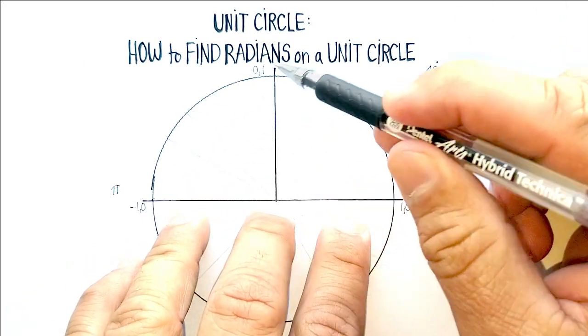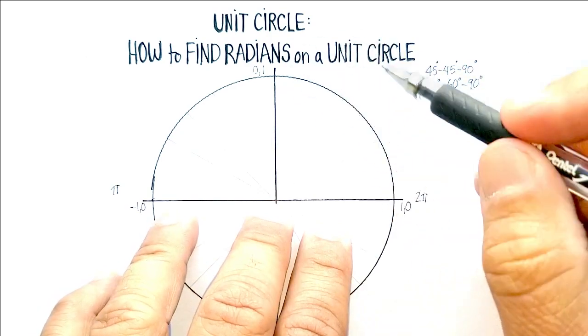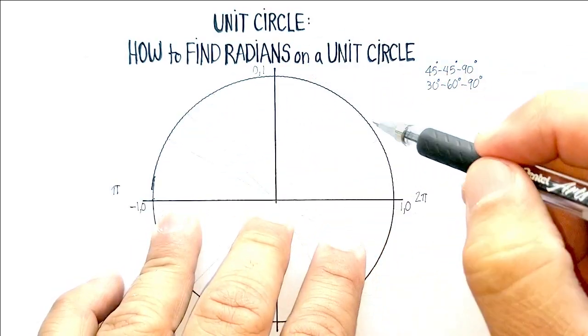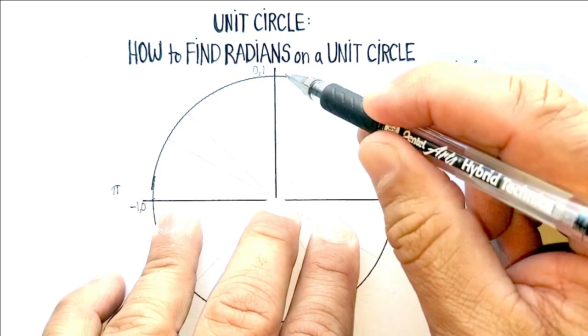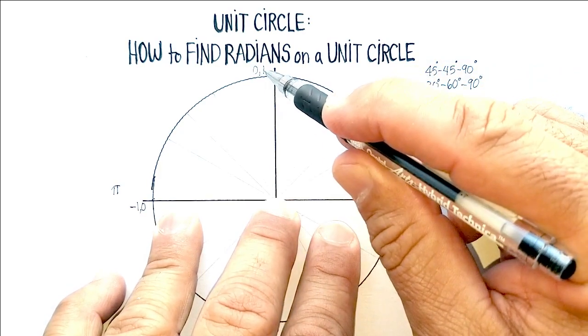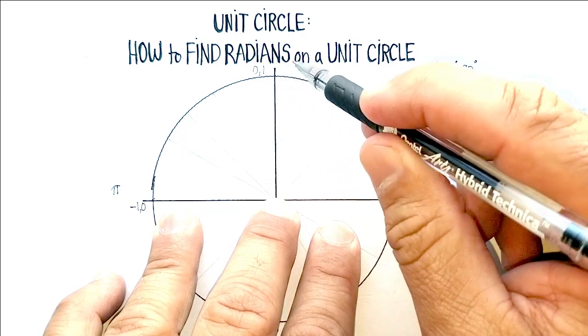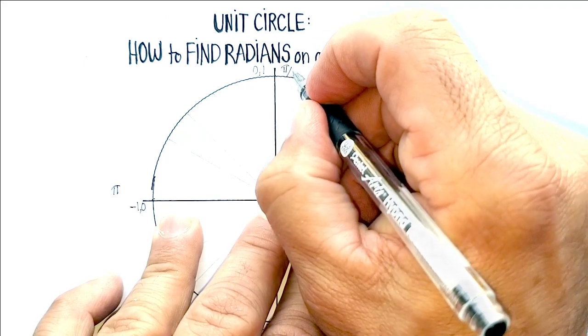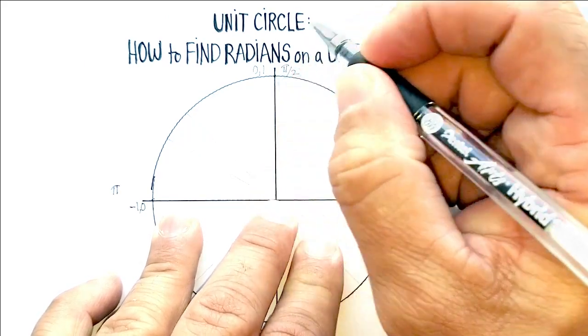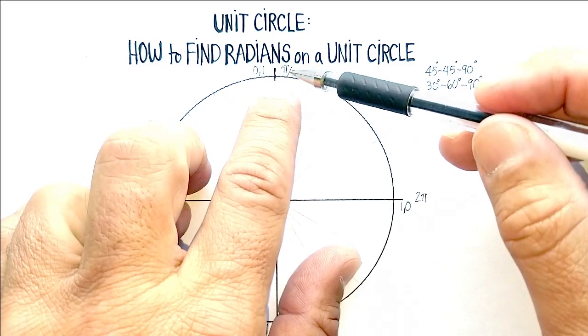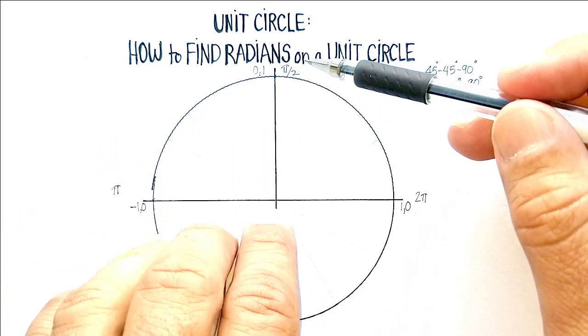Both of those are going to be becoming important in this particular unit circle. Let me show you what we're going to do with those. Now, if we were to take our half circle, and we know that this whole distance here is pi, that means that halfway would be half of pi. So at the coordinate zero, one, we have half pi, or just pi over two.